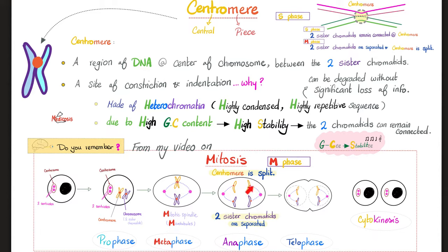Who splits the centromere? The mitotic spindle. Made of what? Microtubules. Made of what? Tubulin protein. And just like any other protein, tubulin requires DNA replication, transcription, and translation — just to undergo mitosis and replicate your cells. Your body is amazing.